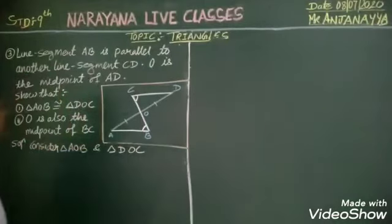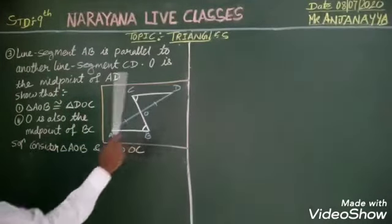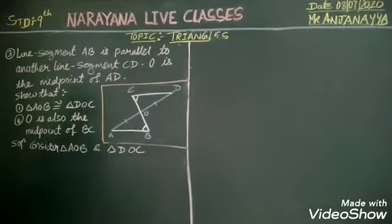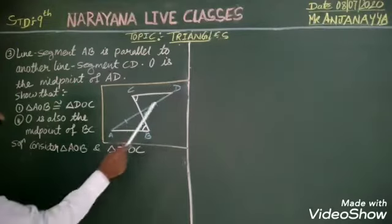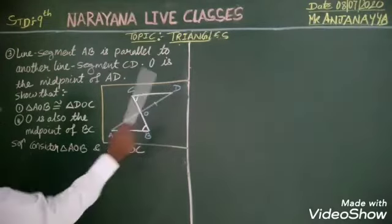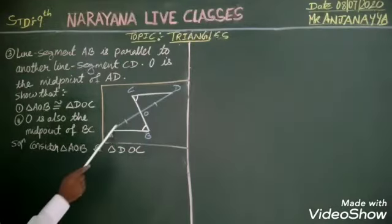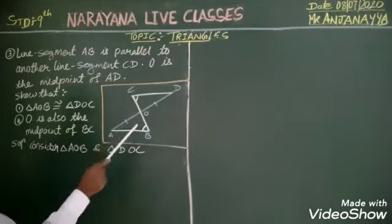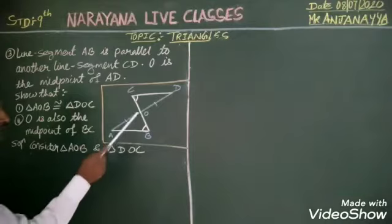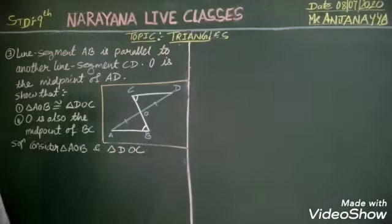Coming to the third question. They have given line segment AB and line segment CD are parallel, and O is the midpoint of AD. I have to prove that triangle AOB is congruent to triangle DOC, and that O is the midpoint of BC.